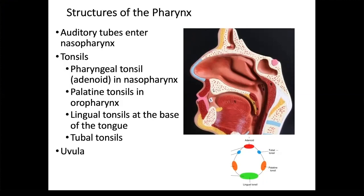The uvula is this structure right here. Its function is to close off the entrance into the nasal pharynx — it moves superiorly, up, and closes off this entrance. This occurs during the swallowing reflex, so that whatever you're swallowing, such as milk, does not move into the nasal pharynx.